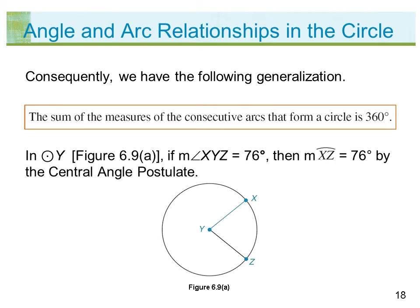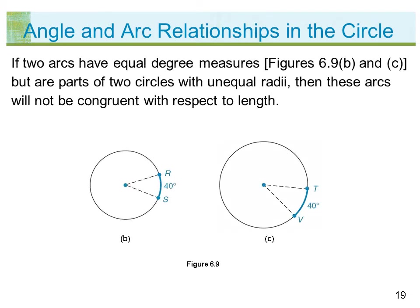In circle Y, figure 6.9A, if the measure of angle XYZ equals 76 degrees, then the measure of arc XZ equals 76 degrees by the Central Angle Postulate. If two arcs have equal degree measures (figures 6.9B and C) but are parts of two circles with unequal radii, then these arcs will not be congruent with respect to length.